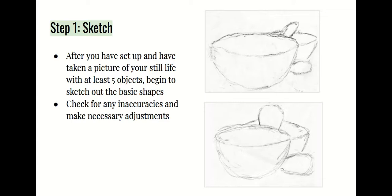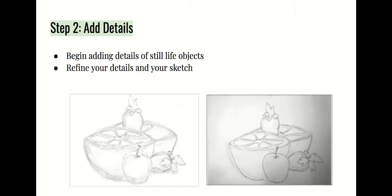Step one: after you have set up your still life and taken a picture with at least five objects, begin to sketch out the basic shapes. Check for any inaccuracies and make any necessary adjustments after you create your basic sketch.